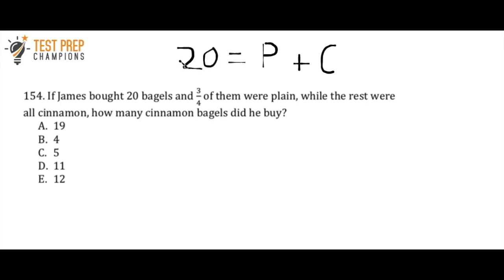So basically what I want to do here is take the fact that three-fourths of them were plain and I'm going to use that to find the number of plain bagels. So all you're going to do to start this off is you're going to do 20 times three-fourths. If you just use a calculator, that's probably the fastest way to do it. You will get 15.